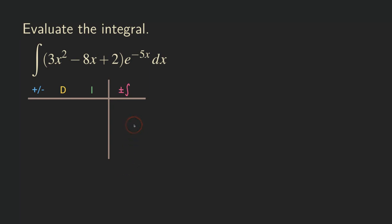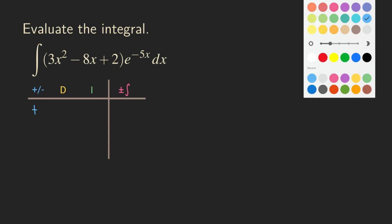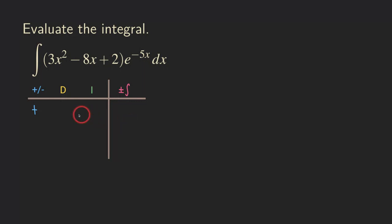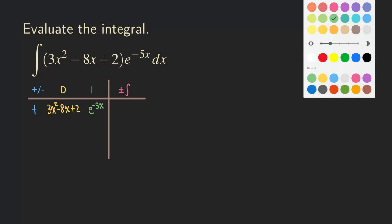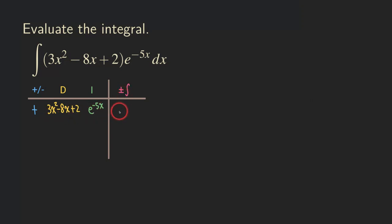Let's get started. The first row has a plus sign. We choose the polynomial as the column we differentiate, so we write down 3x² − 8x + 2 — making the column wider if needed for space. In the integration column, we put the exponential function e^(−5x), omitting the dx. Multiplying all three entries together gives us the original integral of (3x² − 8x + 2)e^(−5x) dx.